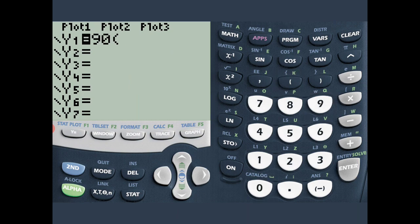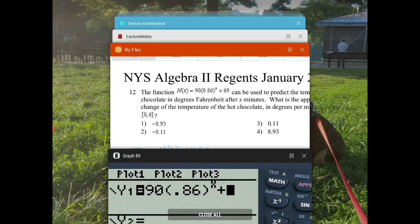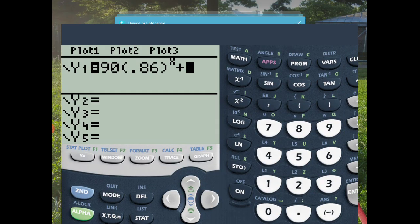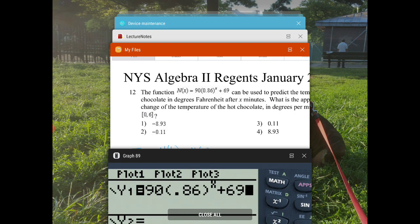I just need to enter in the function that we've given. So that's 90 times 0.86 to the power of x, and plus 96, I believe it was. Let me see here. Plus 69. Plus 69.